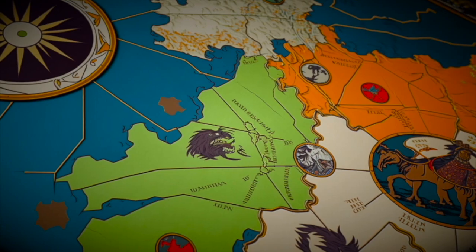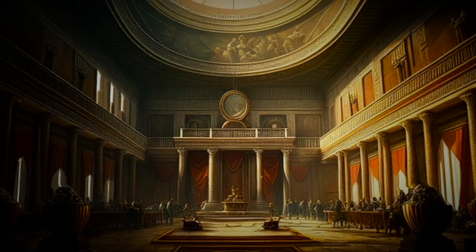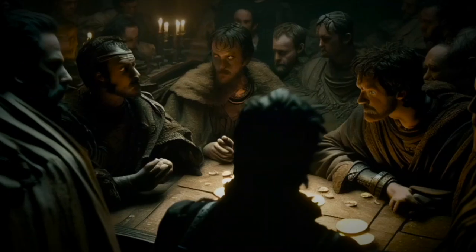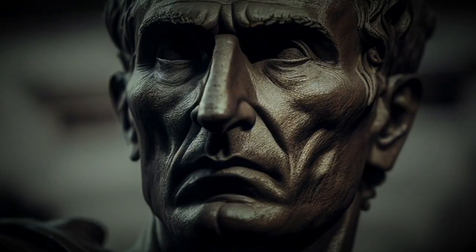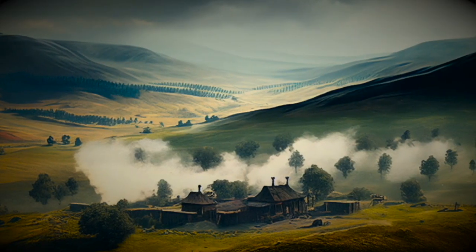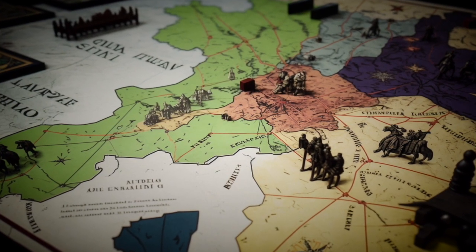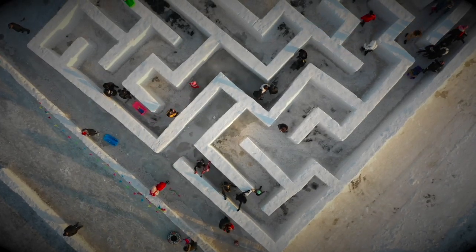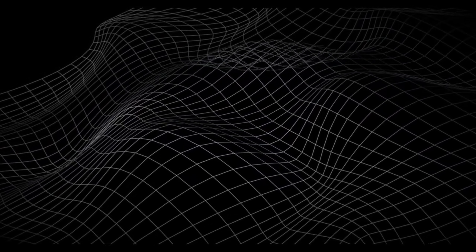Caesar knew that he would face many challenges in his quest to conquer Gaul. The Roman Republic was plagued by internal turmoil and instability, and his enemies were not limited to the Gaulish tribes. There were powerful political factions in Rome fiercely opposed to Caesar and his ambitious goals. He would need to navigate the complex web of alliances and rivalries among the various Gaulish tribes.